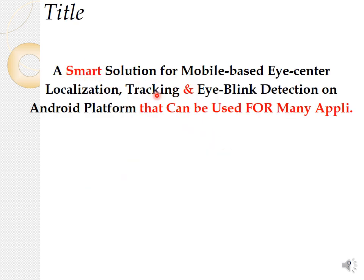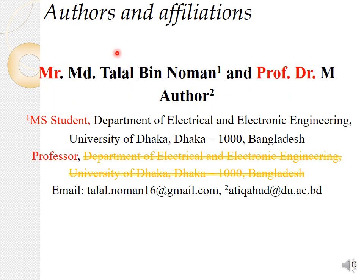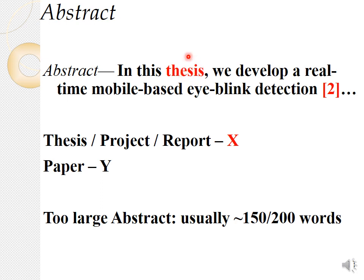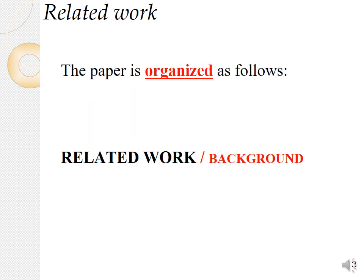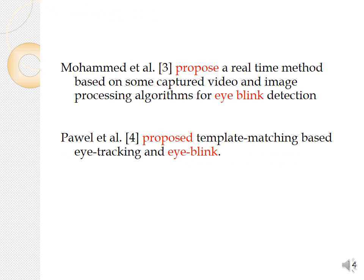Let's try to find a hundred problems of a bad paper. The title is too long and using ampersand is not ideal. In authors and affiliations: 'Professor', 'Dr.', 'Mr.', 'MSc student' — not good. If both authors have the same affiliation, do not put it twice — use one superscript. In the abstract: phrases like 'in this thesis' or 'in this project' are not good. Don't put references in the abstract unless really necessary. Keywords should be only four or five and related. In related work: you need a related work or background section for four- to six-page papers; for shorter papers, you can put it before the final paragraph of the introduction. No underline or bold text usually. Make sure patterns are consistent — like 'propose' vs 'proposed', or hyphen usage.